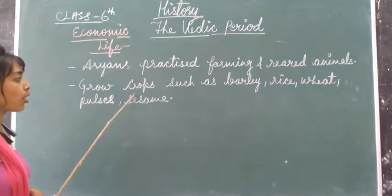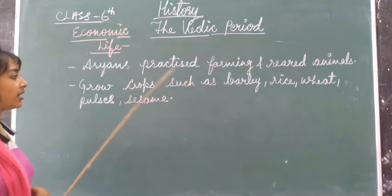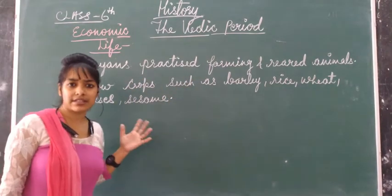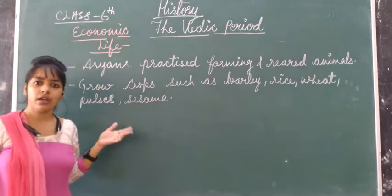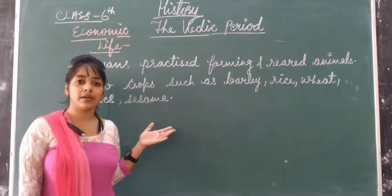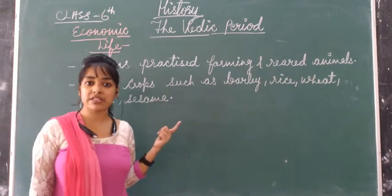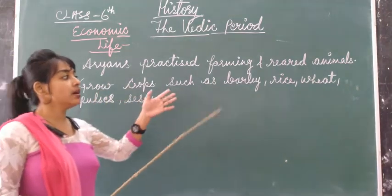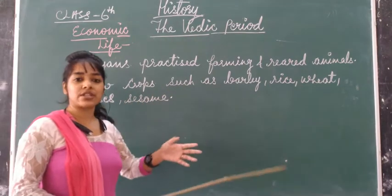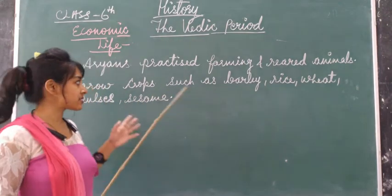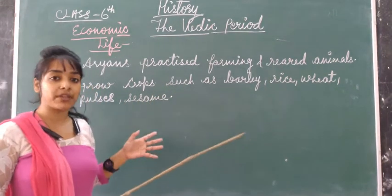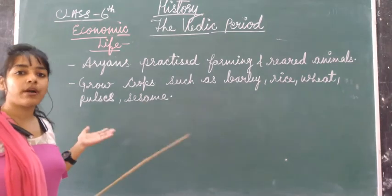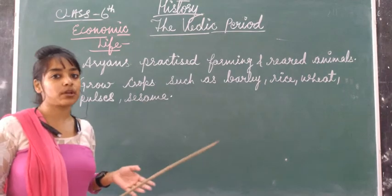Next, they grow crops such as barley, rice, wheat, pulses, and sesame. As you have already studied in the previous videos, the main crops they grow are rice, wheat, barley, pulses, and sesame.